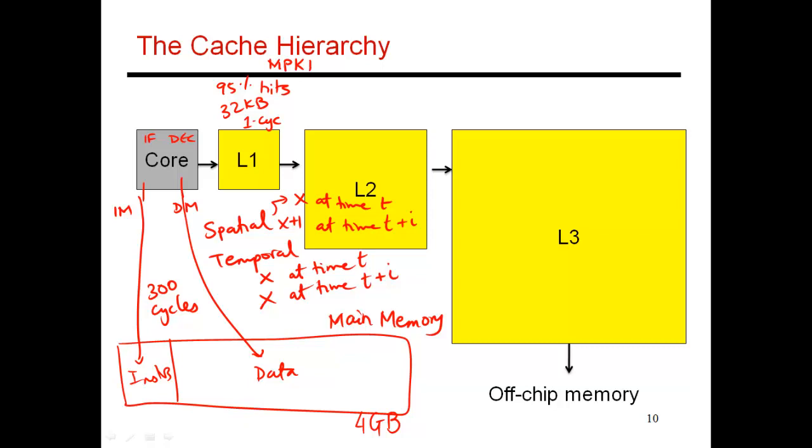The L2 cache obviously has to be made a little bit bigger. Otherwise, it's going to contain no more data than what is already found in L1. So the L2 cache may have a capacity of, say, 256 kilobytes. And because it is a larger structure, it takes longer to transmit signals across long wires across the structure. And so accessing the L2 cache may take of the order of, say, 10 cycles.